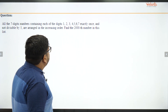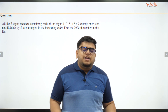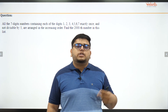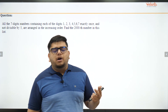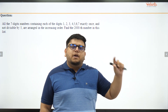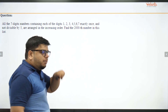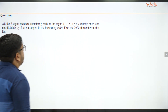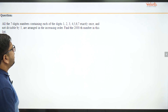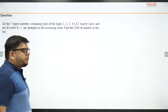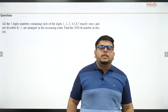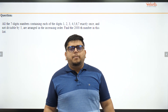By increasing order, you start off with numbers beginning with one, then two, then three, and so on. You have to find the 2000th number in this list. Think of a seven-digit number — you don't need to use too much brain power. Let's say the first digit is one. After that, I find out how many numbers I can form.